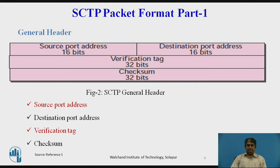The third field is the verification tag — a number that matches a packet to an association. This prevents a packet from a previous association from being mistaken as a packet in the current association. It serves as an identifier for the association, is repeated in every packet, and there is a separate verification tag used for each direction. The fourth field is the checksum — a 32-bit field containing a CRC32 checksum, increased from 16 bits as in UDP, TCP, and IP to 32 bits in SCTP.